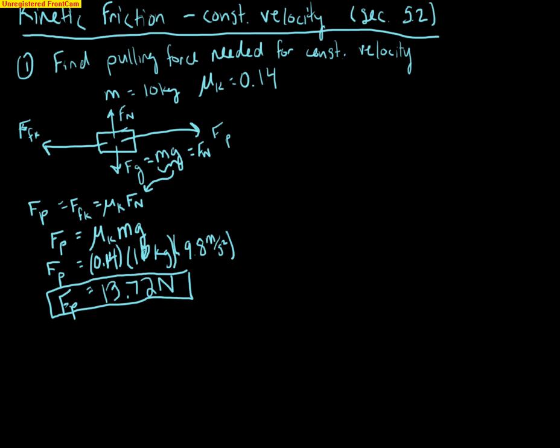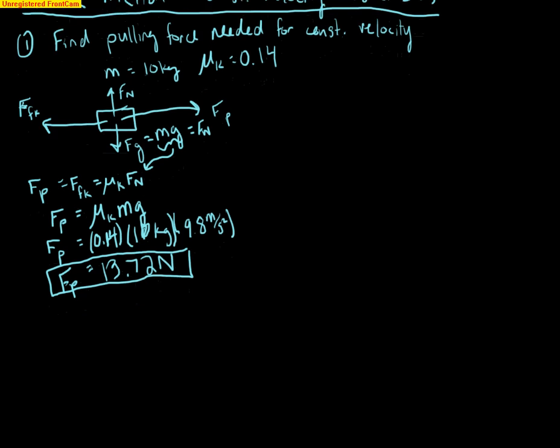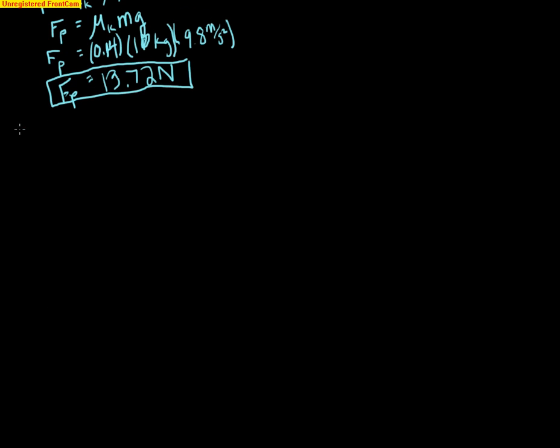Let's look at another example now. Suppose we have an object that's being pulled at a constant velocity, this time we have a book and we're pushing it across the desk at a constant velocity. We want to know what is the coefficient of friction between the book and the desk. So let's say the mass of the book is five kilograms.